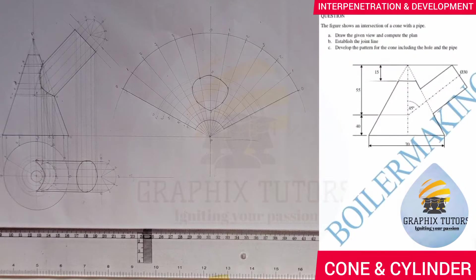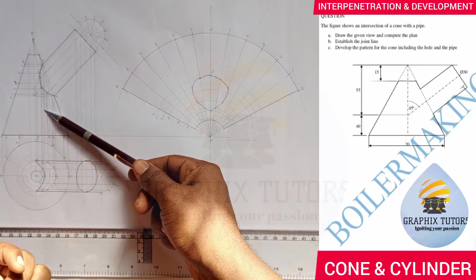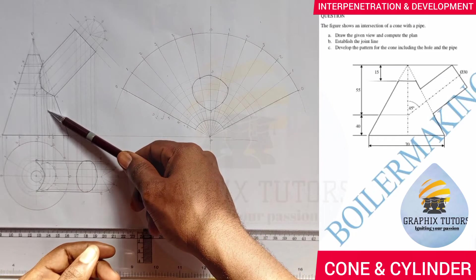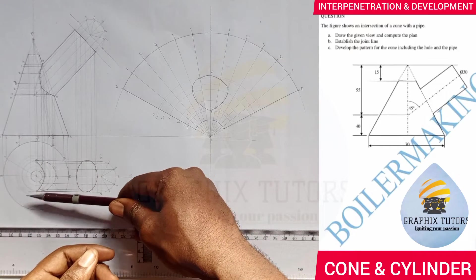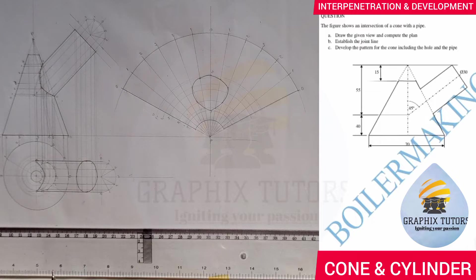My name is Graphics. In this video we are told to draw the given views and complete the plan. The given views we're talking about are the front elevation and plan. What you can see up here is the front elevation and what you can see here is a plan. The question concerns the front elevation and plan of a cone and a cylinder.